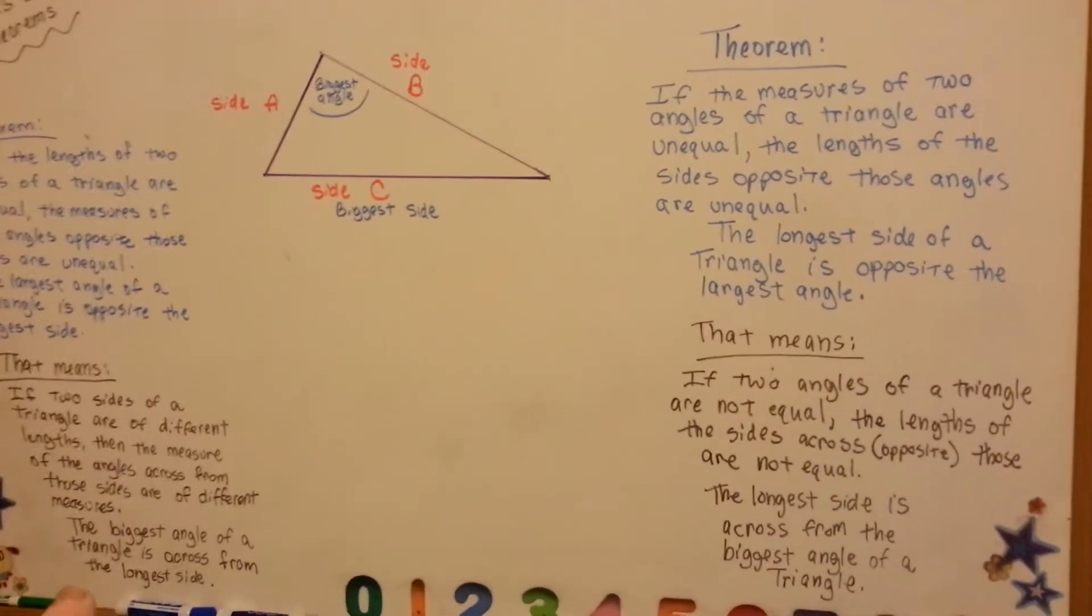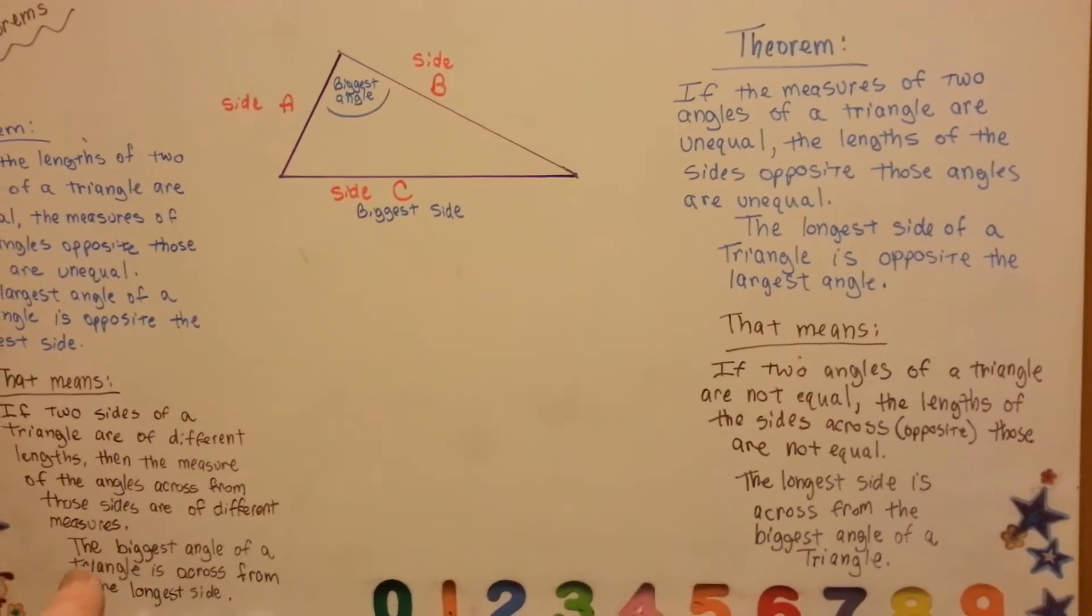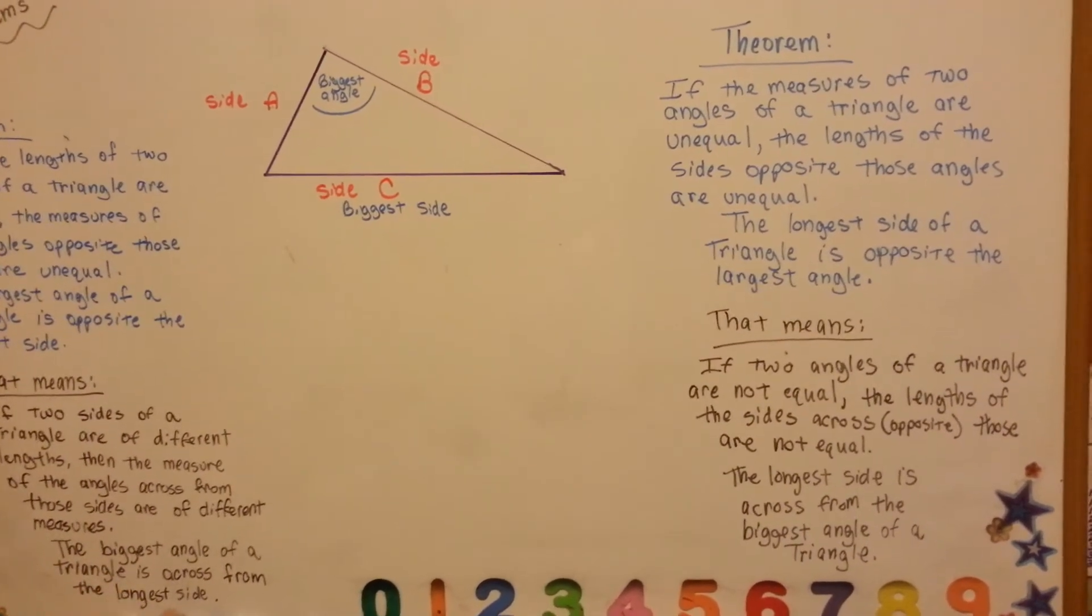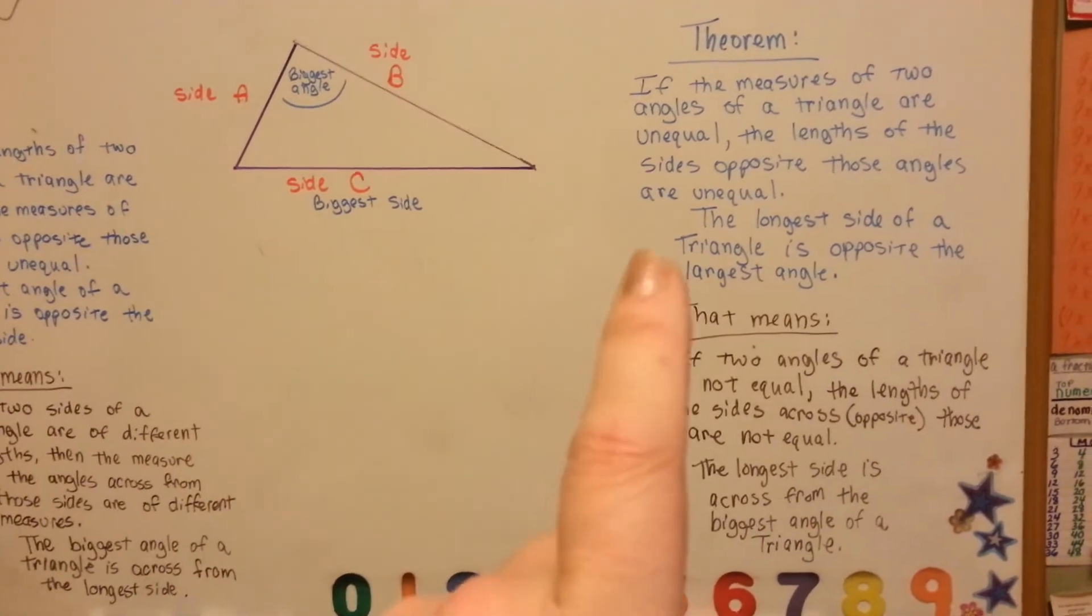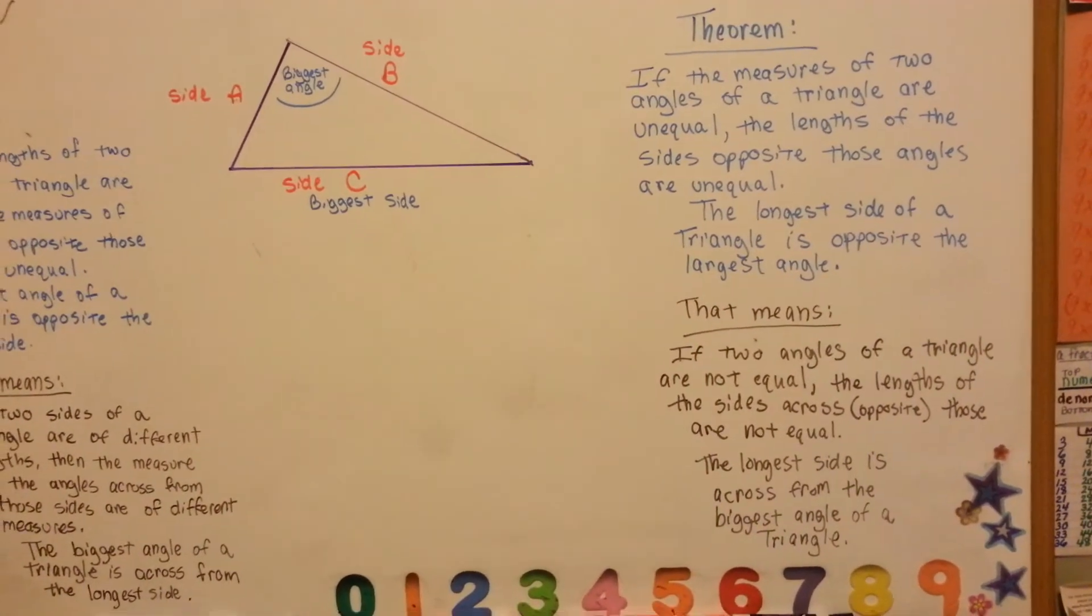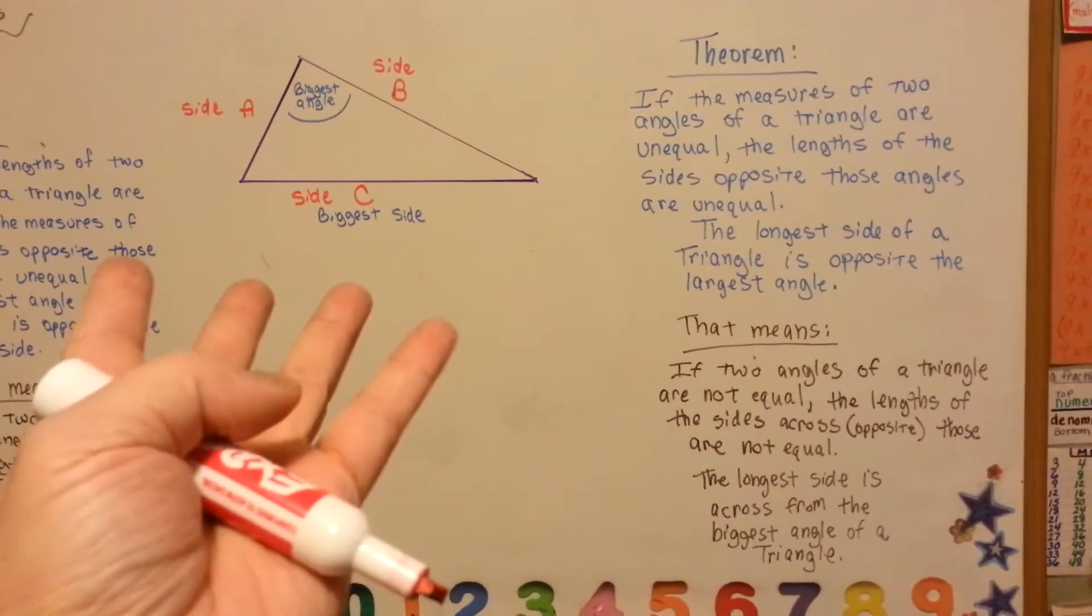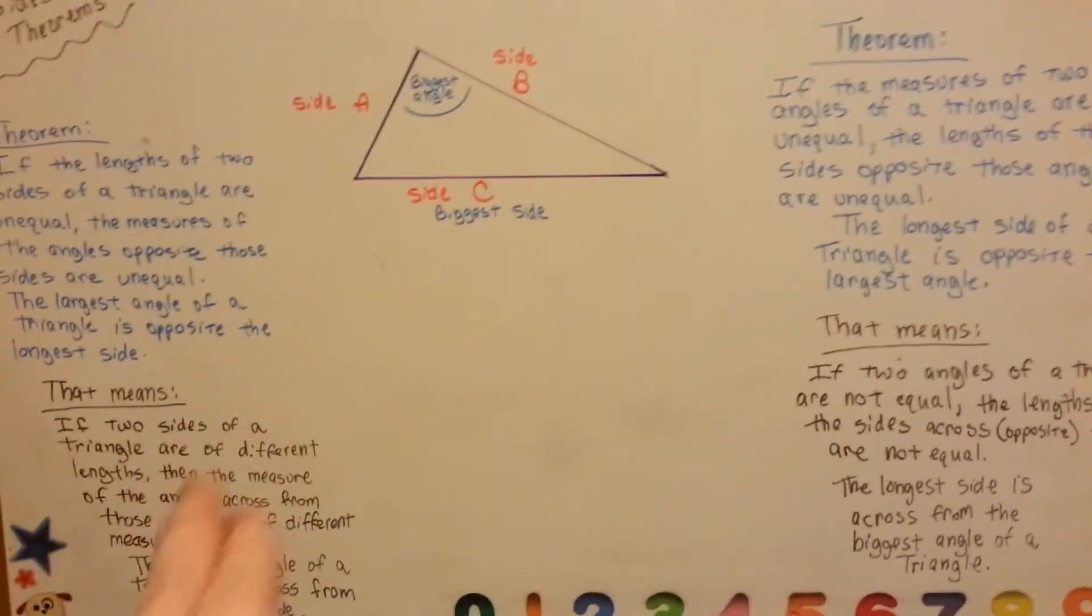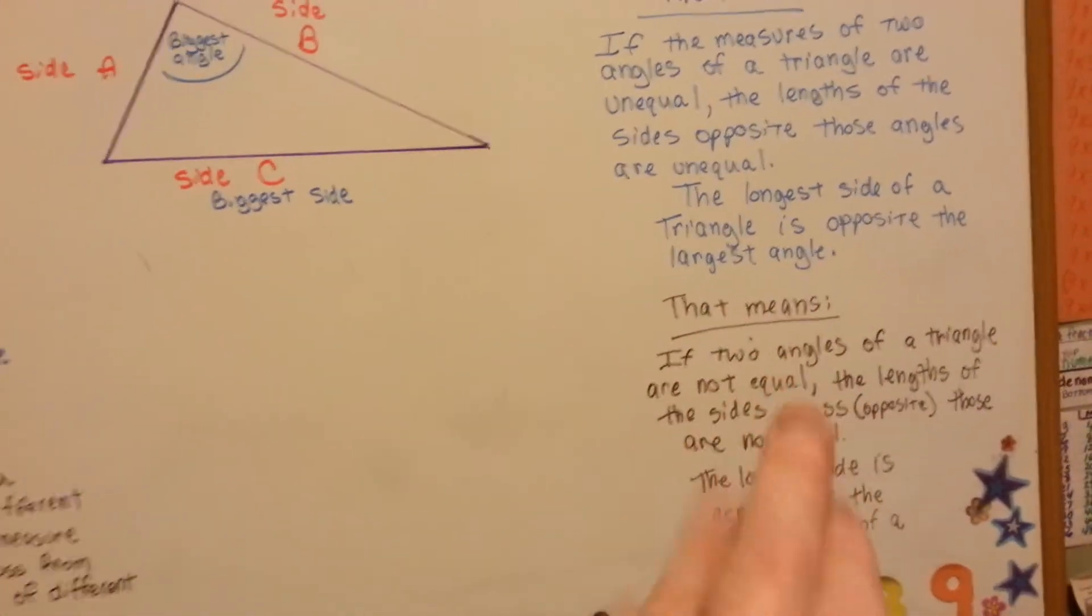So, this one said that the biggest angle is opposite from the longest side. This one says the longest side is opposite the biggest angle. So, it's just flipping it around, okay? Because in a proof, you might need to use it this way, or you might need to use it this way, okay?